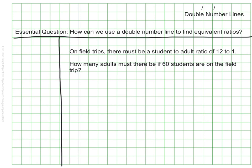As we set up the double number line, let's see what we know. We know we are talking about students and adults in our ratio, and we know that the base ratio or the starting ratio is 12 to 1.